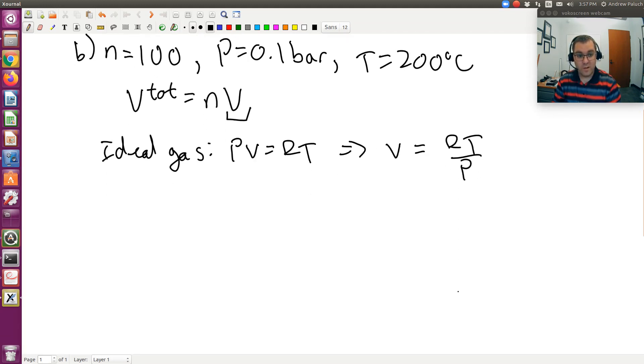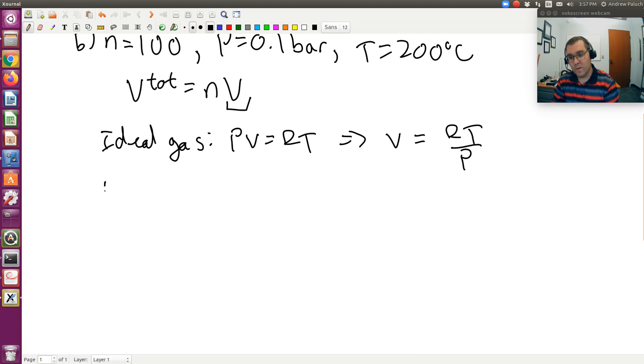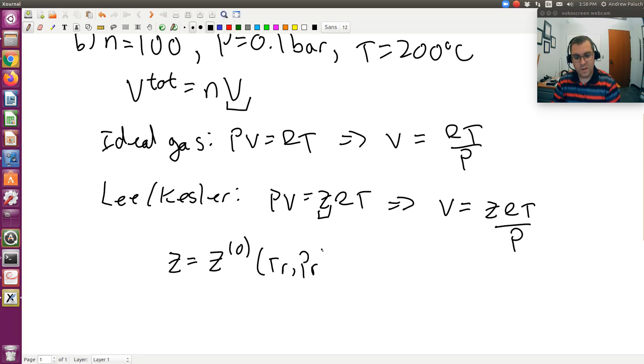If we were to use the Lee-Kessler tables, then the idea is we would use the equation of state for real fluids, PV is equal to ZRT. You could just as well use an equation of state, but the goal would be to calculate Z here. So V now would be ZRT over P. Then to get Z, Lee-Kessler is just Z is equal to Z naught, which is a function of my reduced coordinates, TR and PR, plus omega times Z1, where Z1 is also a function of my reduced coordinates, TR and PR.